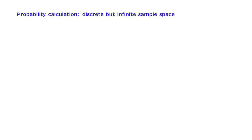We have seen so far an example of a probability law on a discrete and finite sample space, as well as an example with an infinite and continuous sample space. Let us now look at an example involving a discrete but infinite sample space.